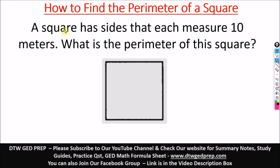So to get the perimeter of a square, the formula from our math formula sheet is perimeter is equal to 4s. What is s? S is the values of the sides.